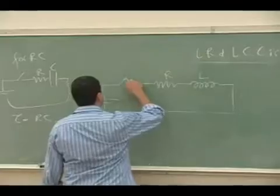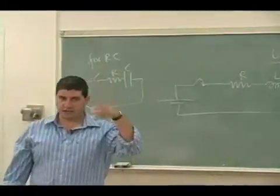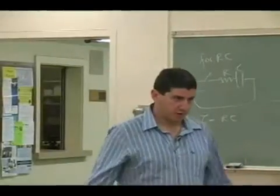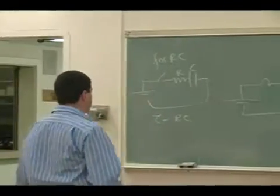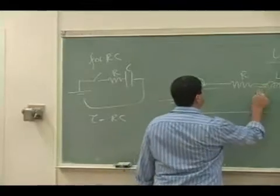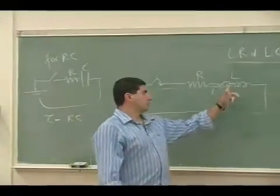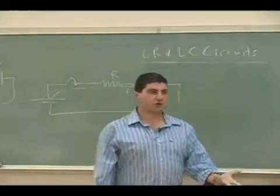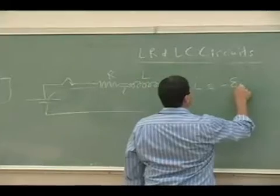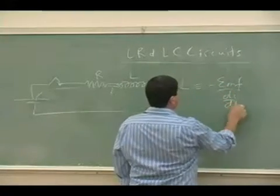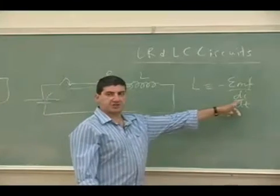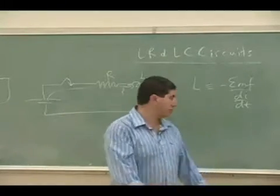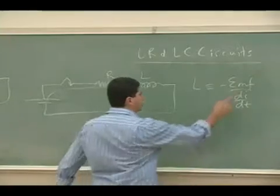Let's first analyze logically what should happen when we close the circuit. All of a sudden, the battery wants the current to go through the circuit, so it pushes the electrons — current is introduced. The inductor doesn't like that; the inductor doesn't like changes. Inductance of an inductor is defined as EMF over di/dt. So as soon as you introduce current, the rate of change of current is very high, and therefore the EMF it produces is high.